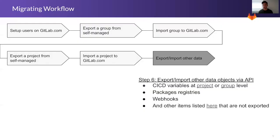Once all projects and groups are imported into GitLab.com, step six is to consider other data objects that weren't included, such as CI/CD variables, package registries, webhooks, and any other items listed in the following slides.